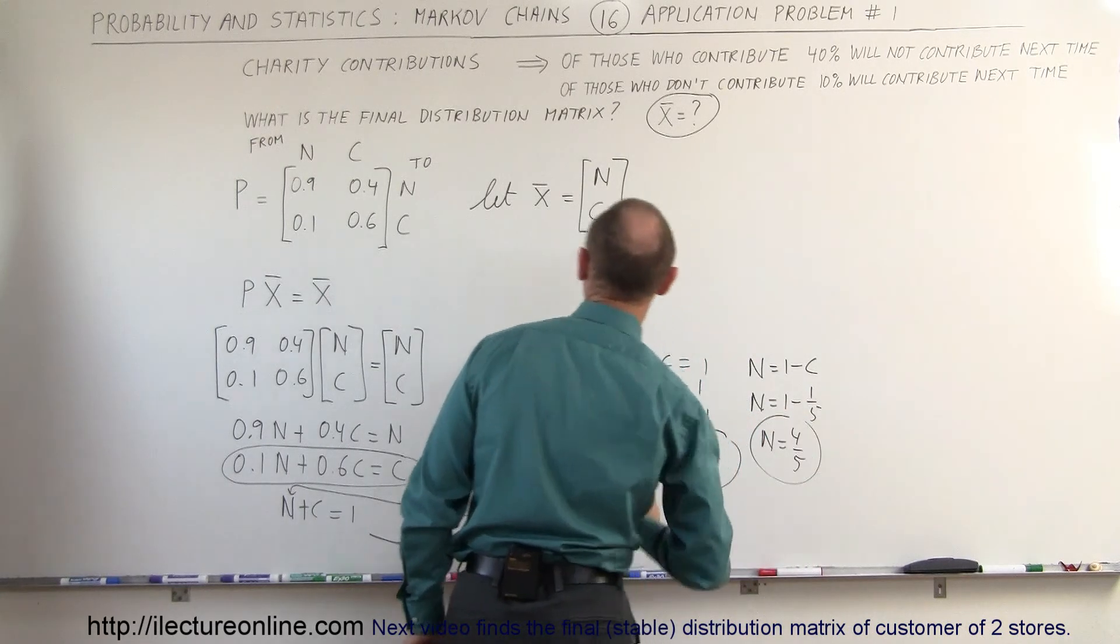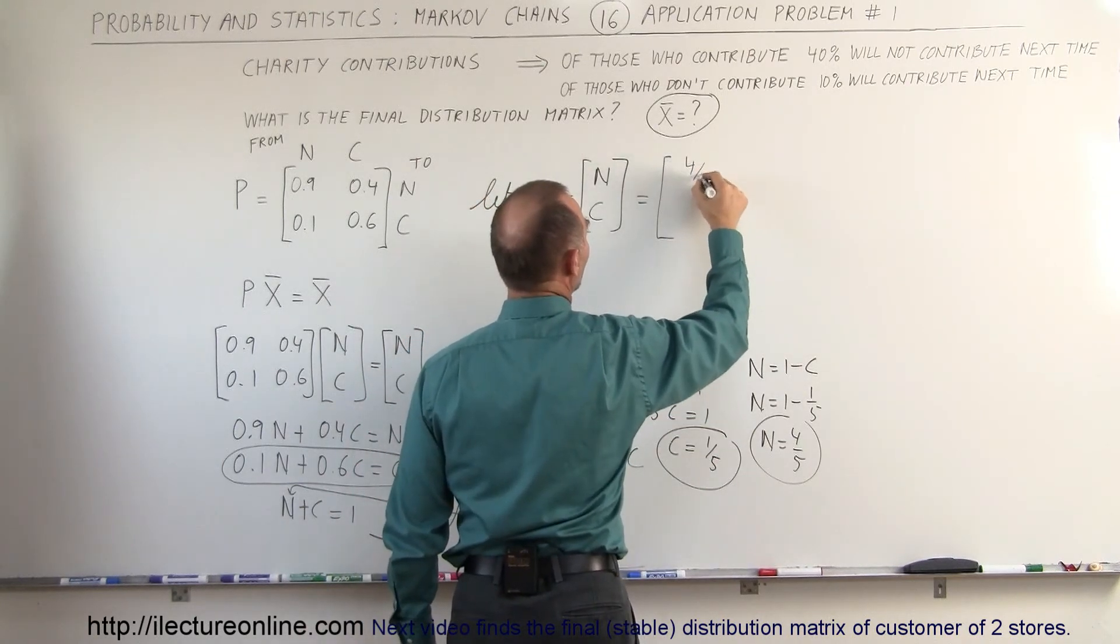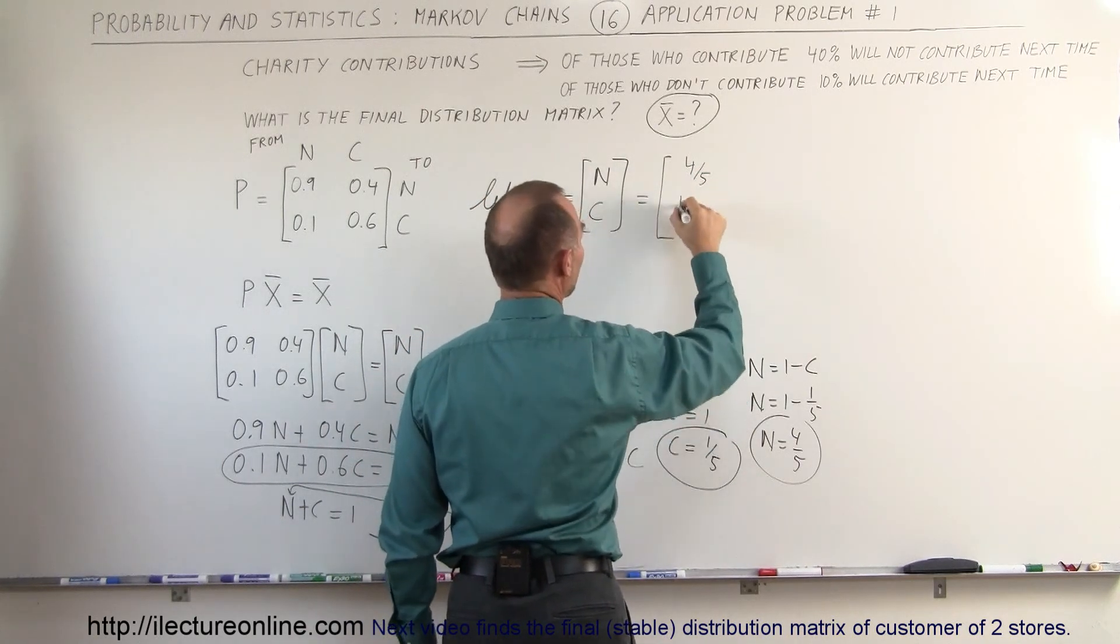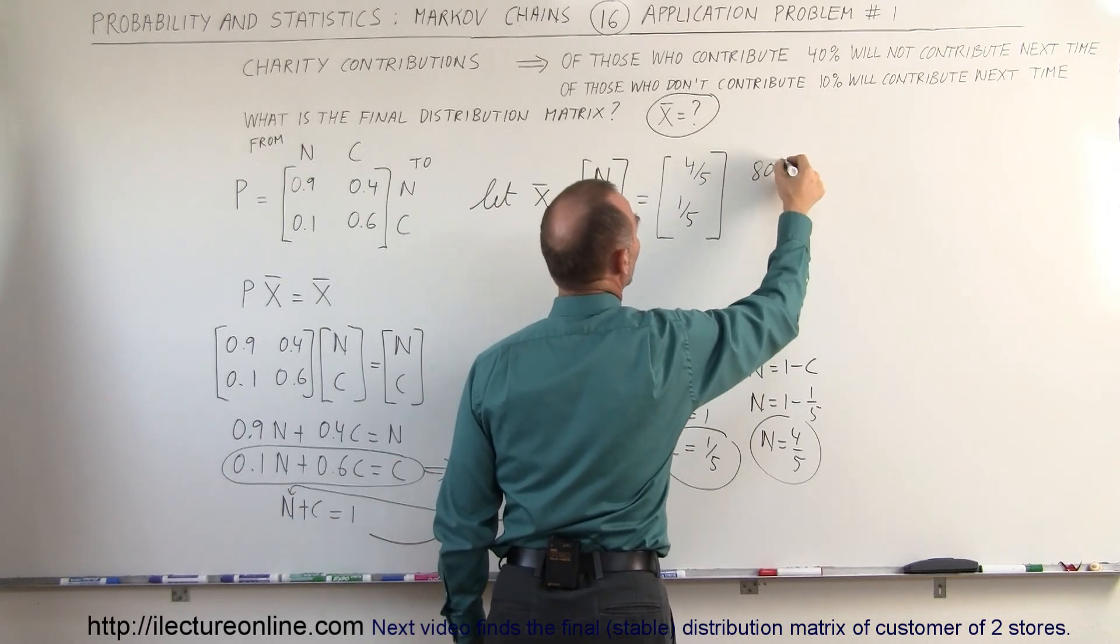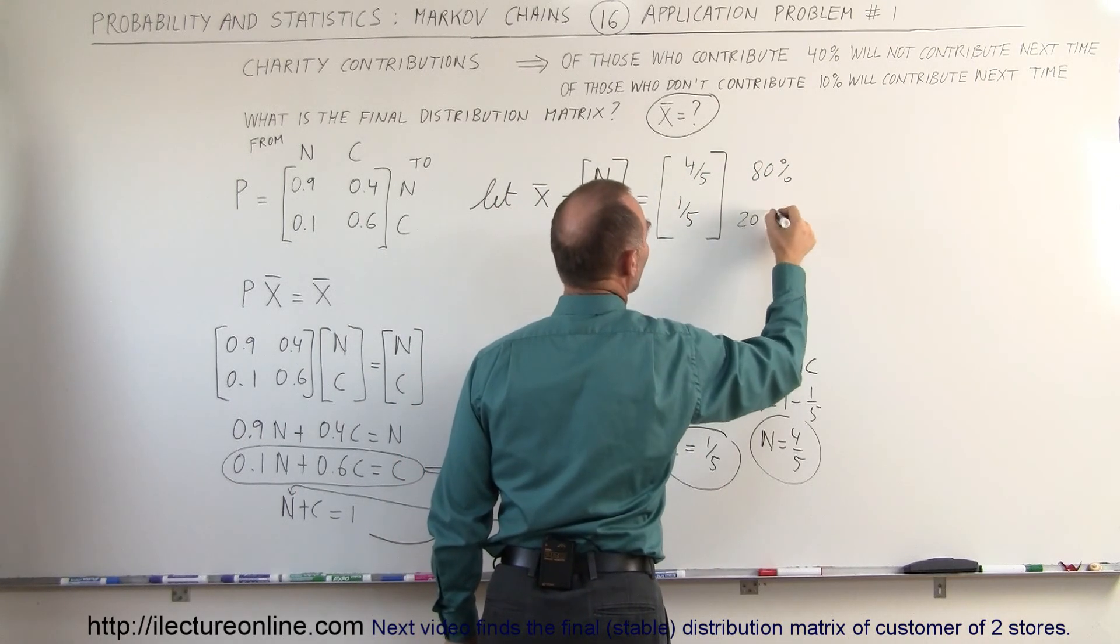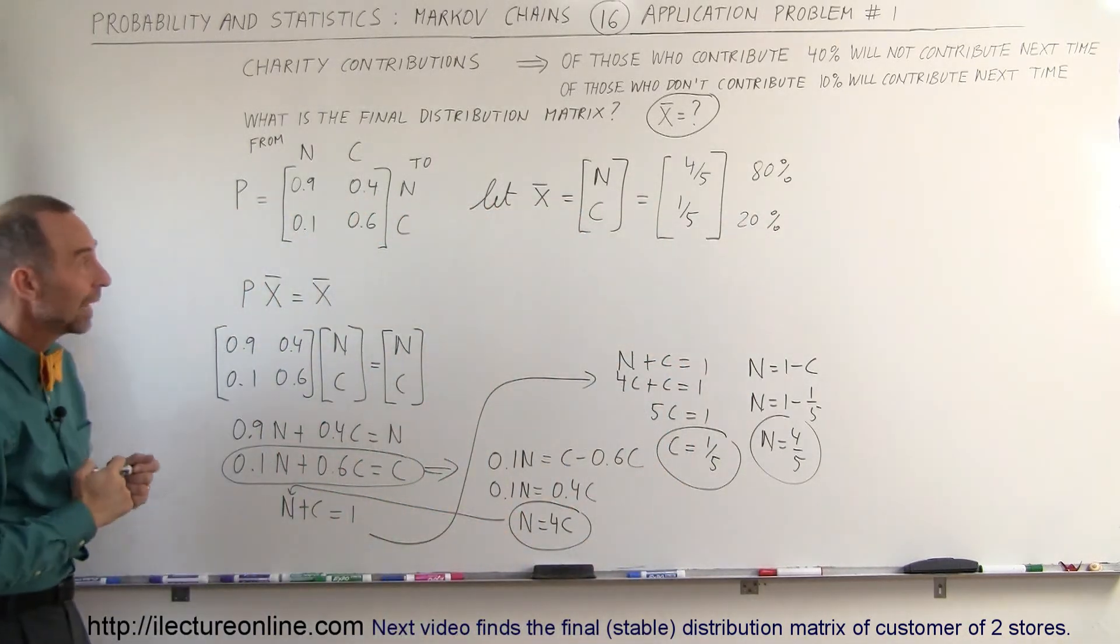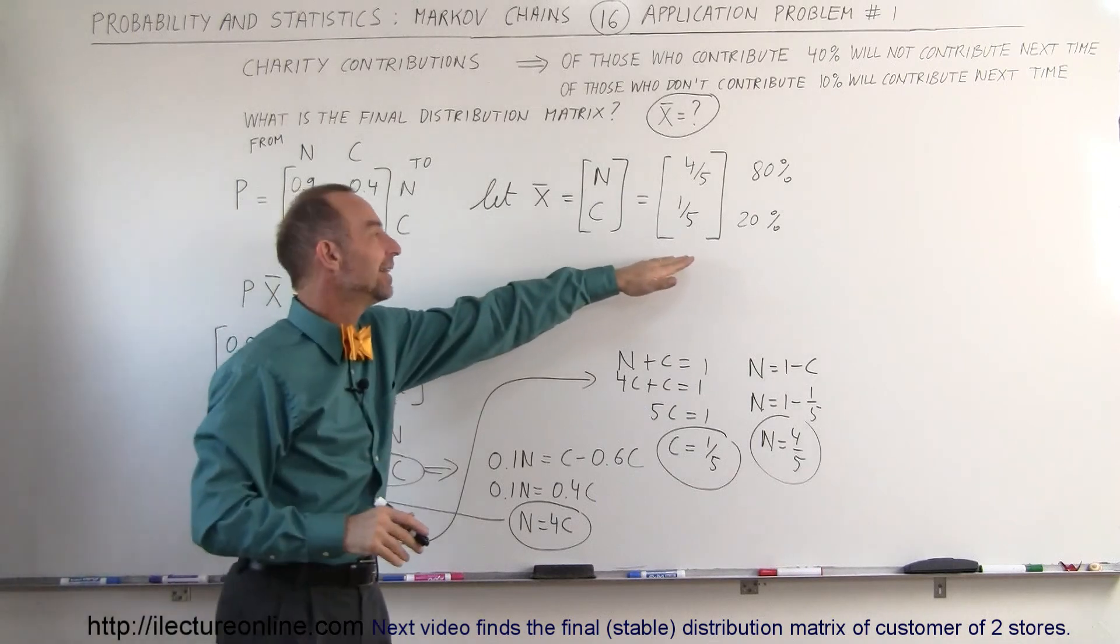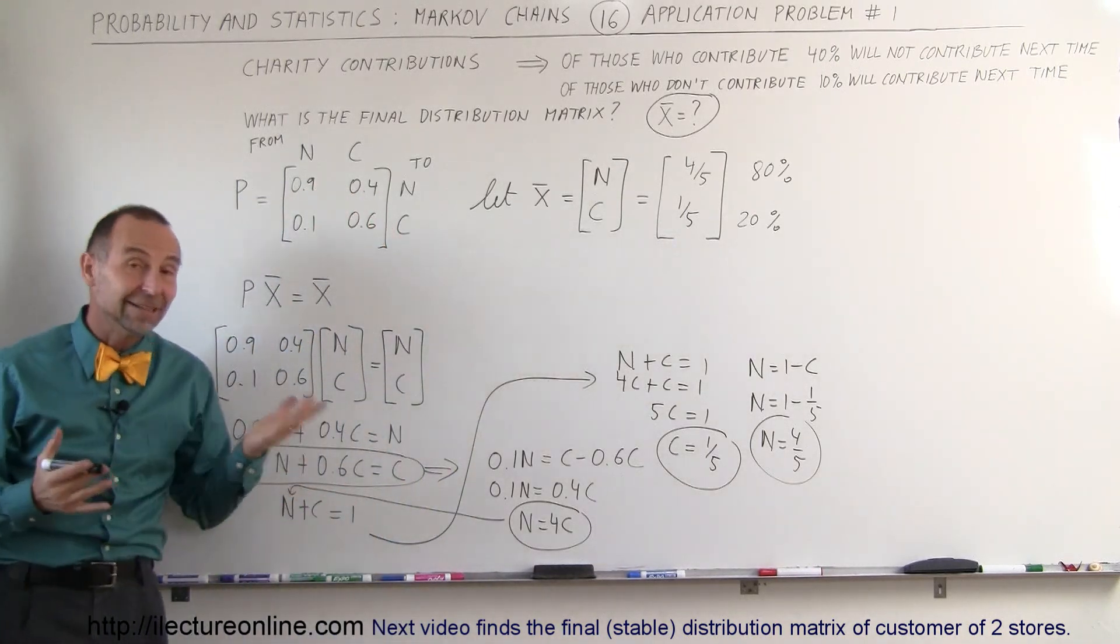So on our final state, we can say that the non-contributory will be equal to 4 fifths, and the contributory will be equal to 1 fifth. In other words, 80% of the people will not contribute, and 20% of the people will contribute, and that will be the final state that we will end up in. So this is called the stable distribution matrix. That's what we call it, and this is how we do that.